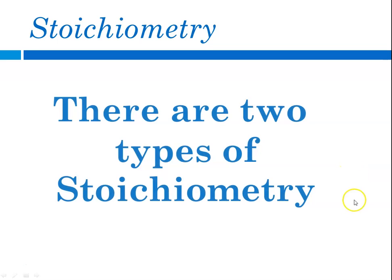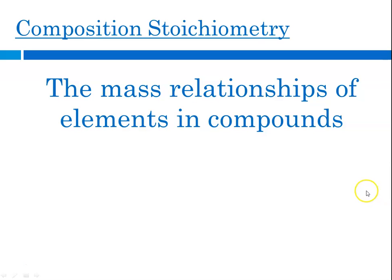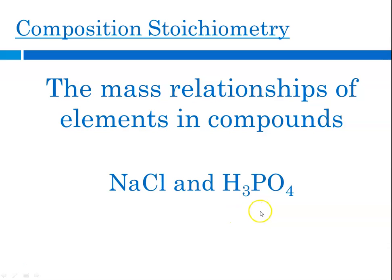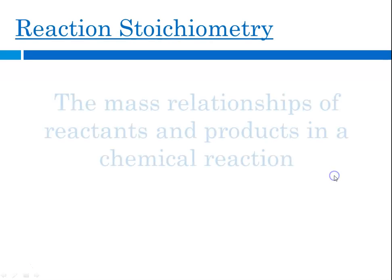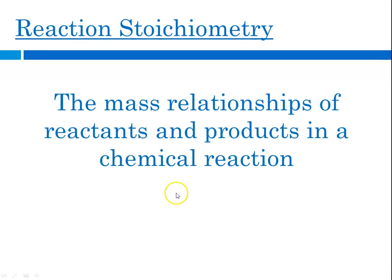There are two types of stoichiometry. The first type is composition stoichiometry, which describes the mass relationships of elements to one another in compounds. You've been doing it all along when we did chapter 7 and calculated molar mass — every time you calculated the molar mass for sodium chloride or phosphoric acid, you were doing composition stoichiometry. In this chapter we're going to begin talking about reaction stoichiometry, which is the mass relationships of reactants and products in a chemical reaction.